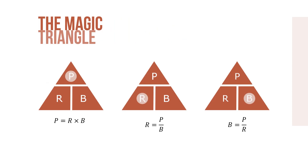Another method for remembering the percentage formulas is using the magic triangle. The triangle is divided into three sections representing the portion, rate, and base. By circling the letter in the percentage triangle that corresponds to the unknown of the problem, the triangle will magically reveal the correct formula to use. For example, for portion, P equals R times B — you can see it right there in the triangle.